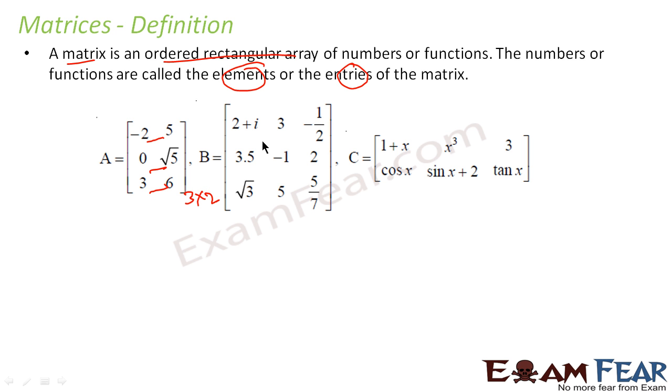Similarly, in this one, if you see, it is function actually. It is not number. 3 plus i is a number actually, sorry. It is a number because it is imaginary number. Here if you see, there are 1, 2, and 3 horizontal sets. So this is 3 into 1, 2, 3. 3 into 3. The order of this matrix is 3 into 3.